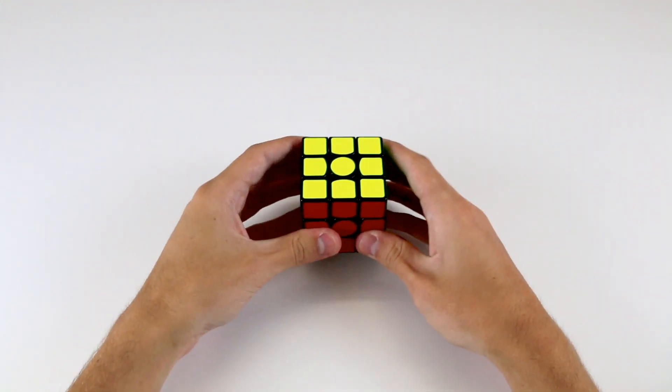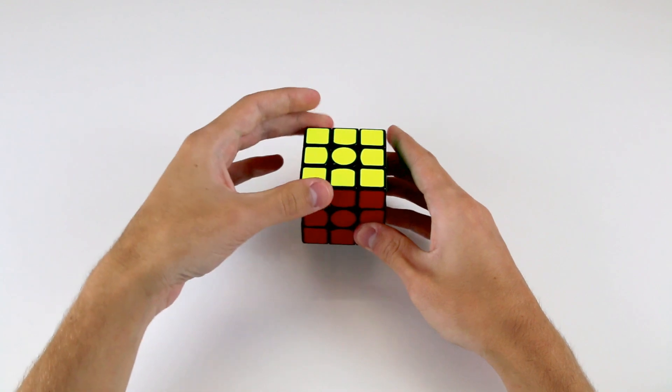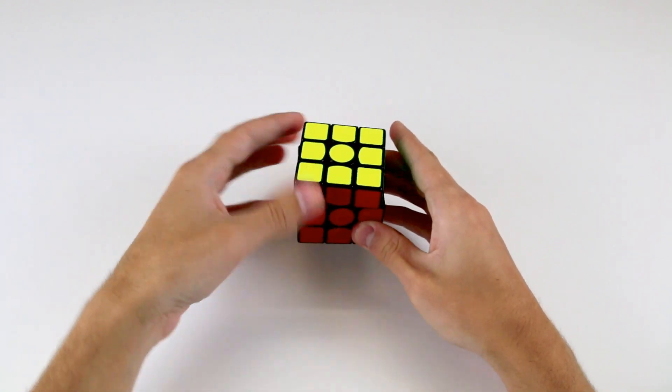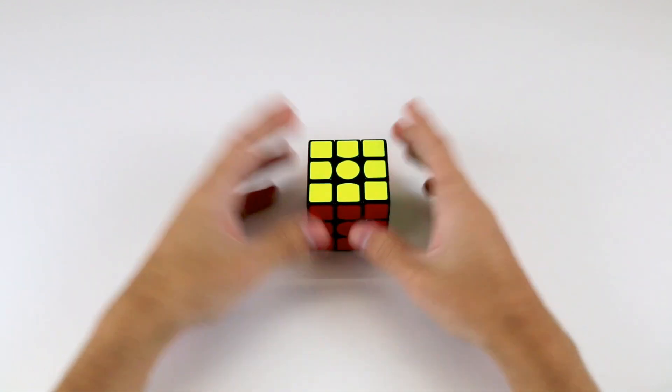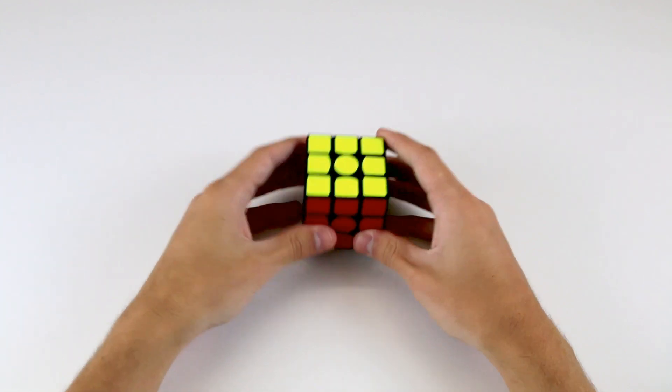And notice when I was doing those moves, I kept all the centres fixed and simply turned the layer around the centres, and that's what the notation specifies.